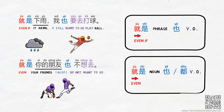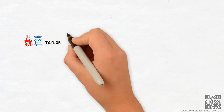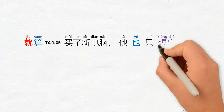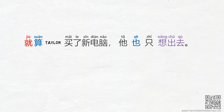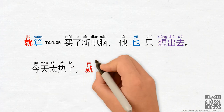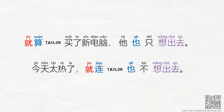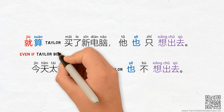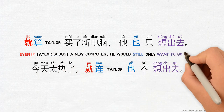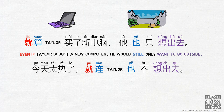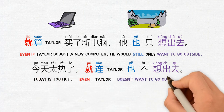Let's look at another group of examples. 1: 就算Taylor买了新电脑，他也只想出去. 2: 现在太热了，就连Taylor也不想出去. Can you figure out what they mean? The answers are: 'Even if Taylor bought a new computer, he would still only want to go outside,' and 'Today is too hot — even Taylor doesn't want to go outside.'